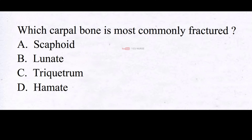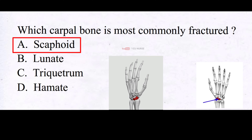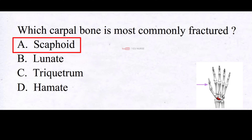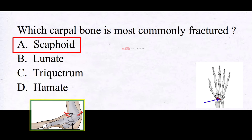Which carpal bone is most commonly fractured? A. Scaphoid, B. Lunate, C. Triquetrum, D. Hamate. And the correct answer is A. Scaphoid. The scaphoid bone is most commonly fractured among the carpal bones because of its location and vulnerability to injury. It is situated at the base of the thumb side of the wrist, which exposes it to forces and impacts during hand and wrist activities. The most common cause of scaphoid fractures is a fall onto an outstretched hand with the wrist bent backward. This position transmits the force through the wrist joint, making the scaphoid bone susceptible to fracture due to its position and orientation.